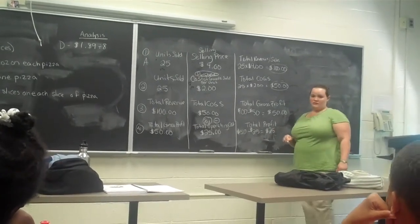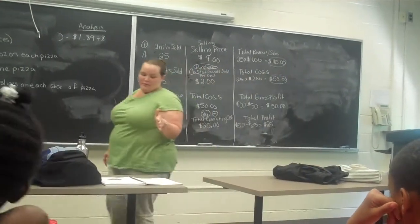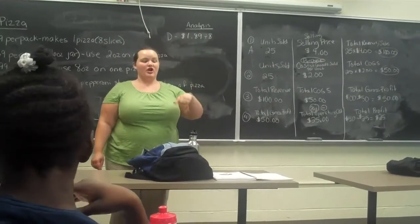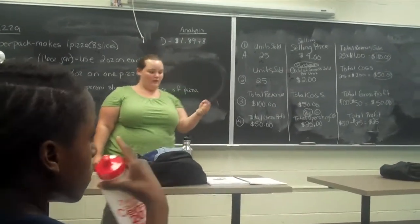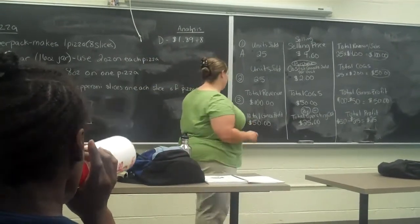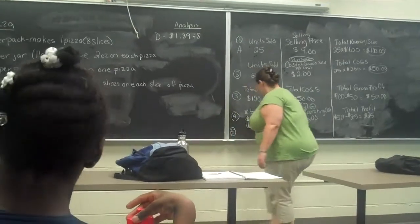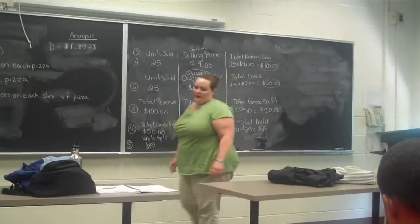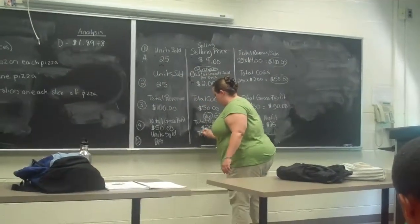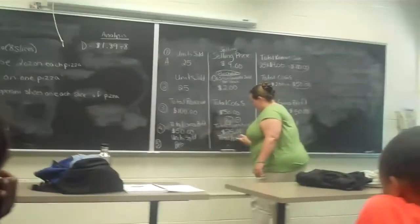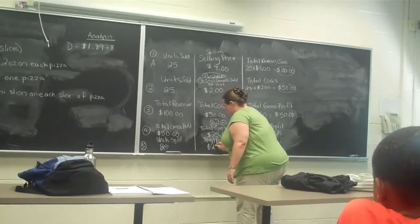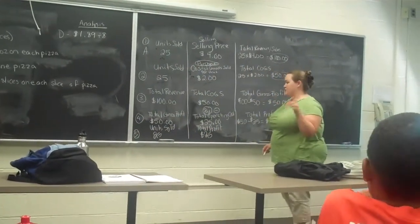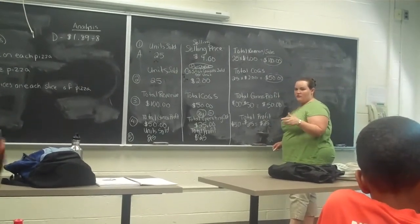That went down pretty quick, huh? Our last step. Before, we found how much it cost us to buy one unit; now we're going to find out how much it costs us to sell one unit — how much we make off of one unit. This last step starts with our units sold. How many units did Company A sell? 25. And what was the total profit? $25.